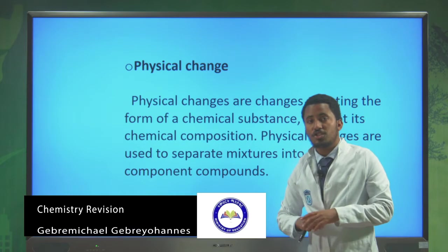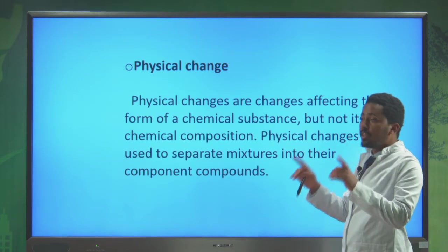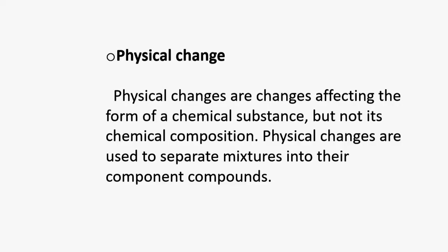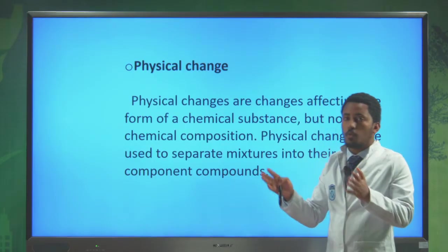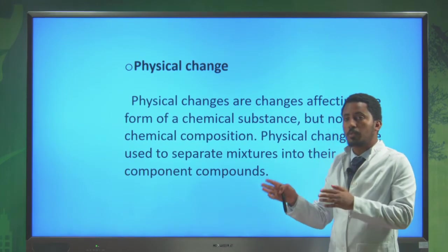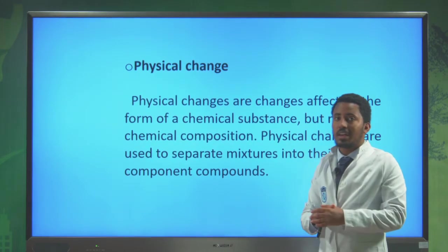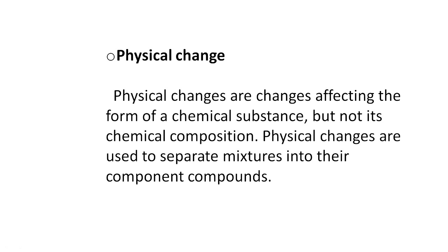The second type of change is physical change. Physical change means the change affects only the form of a chemical substance but does not affect the composition of the chemicals. Physical changes are used to separate mixtures into their components. When we want to separate any compounds, it is better to use their physical properties, because physical properties are always unique for every matter.